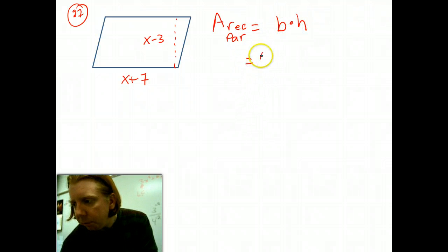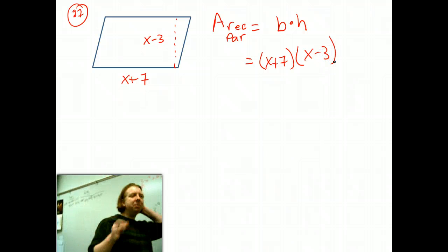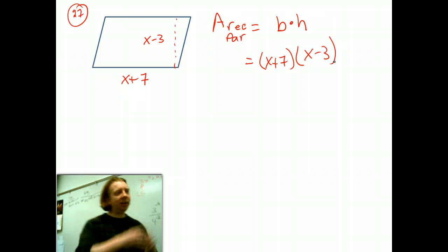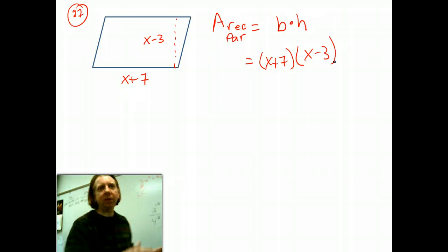In this case, the base is—no, it's not x squared minus 21. It's that very mistake that tends to get people in trouble with these problems. You can't just look at these two binomials and multiply the x's and then multiply the numbers.